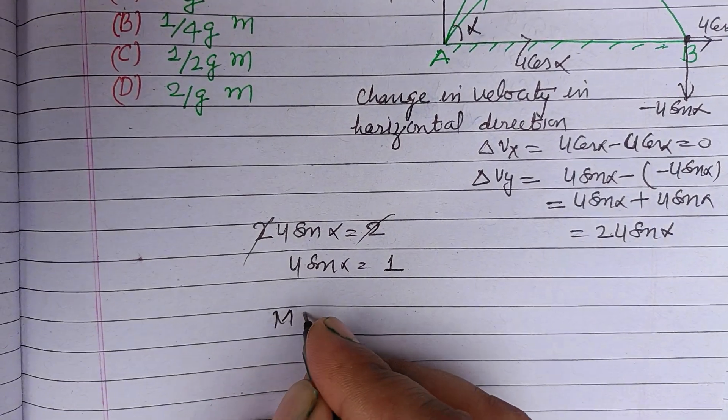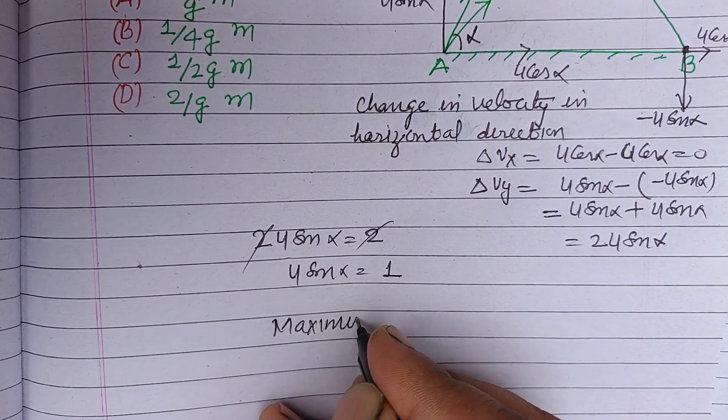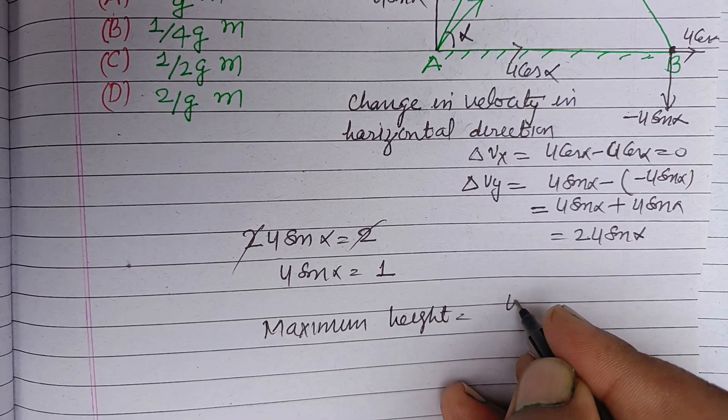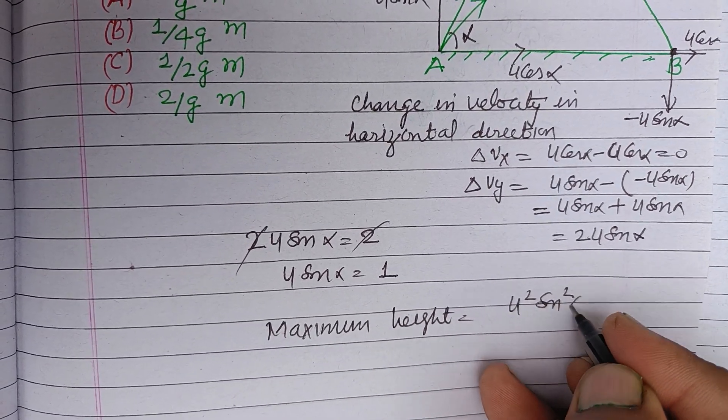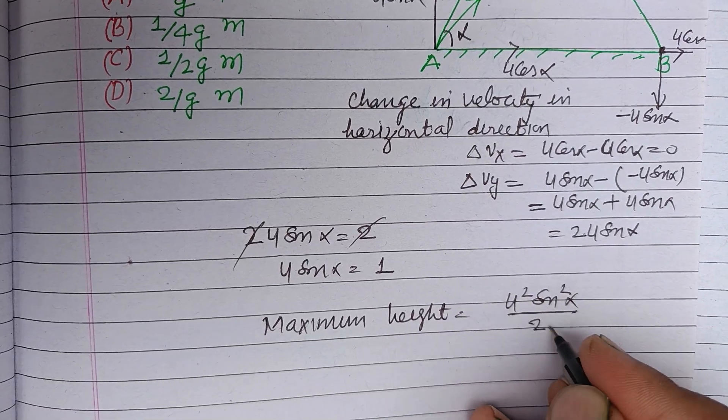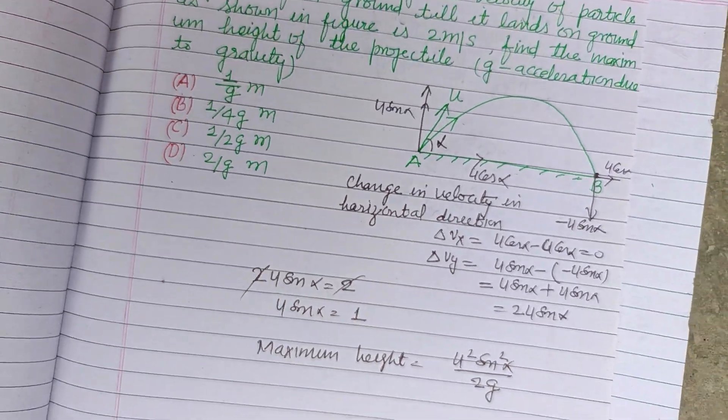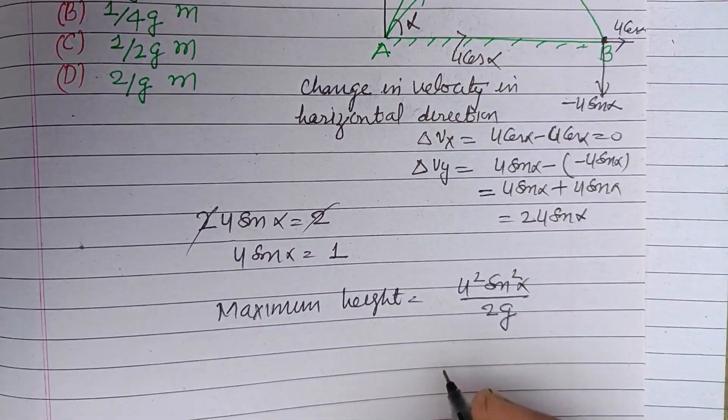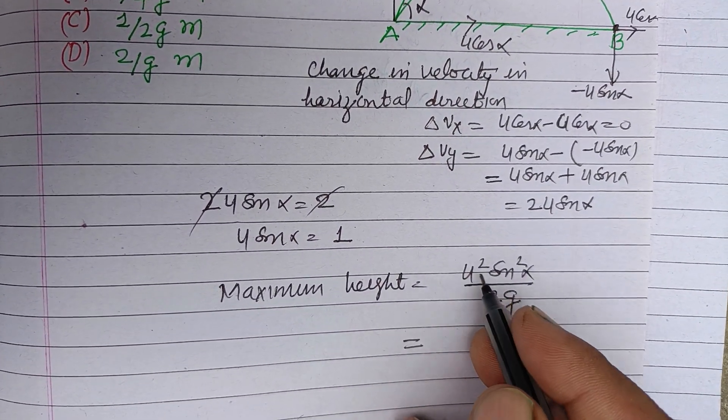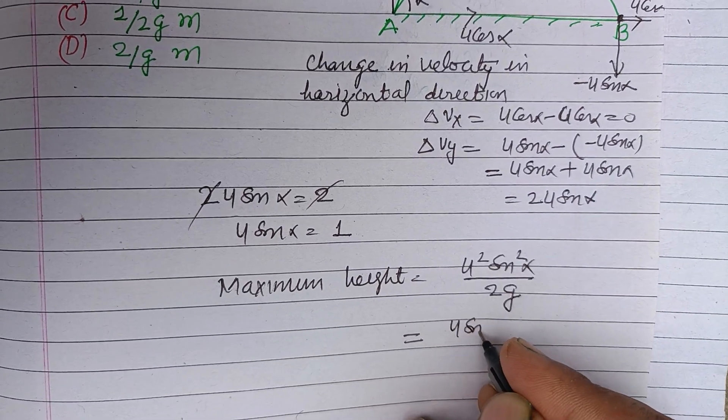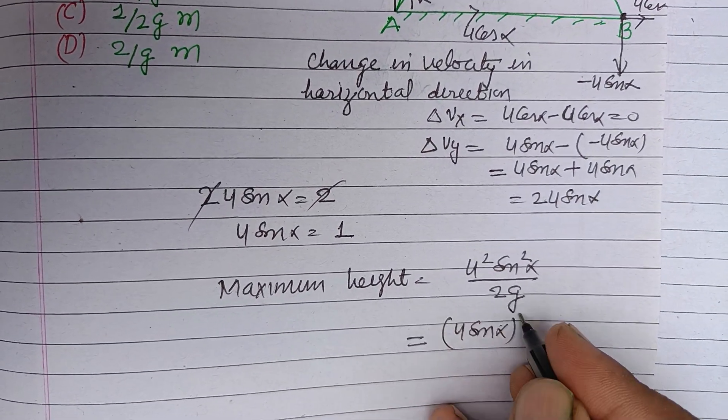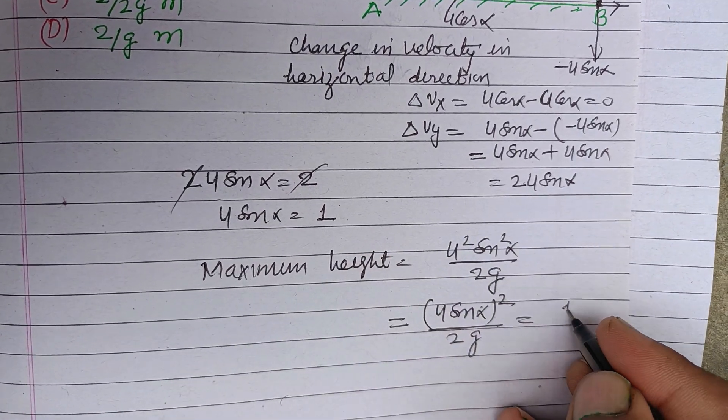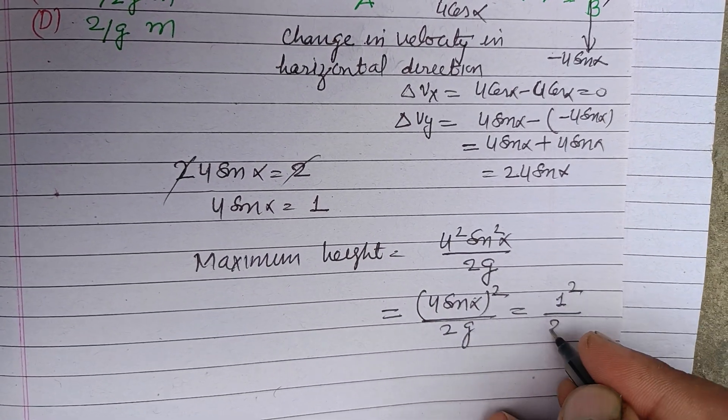Now maximum height equals u sine alpha whole squared upon 2g. This is the formula of maximum height attained by the projectile. So here u sin alpha is given to us as 1, so 1 squared upon 2g, which equals 1 upon 2g.